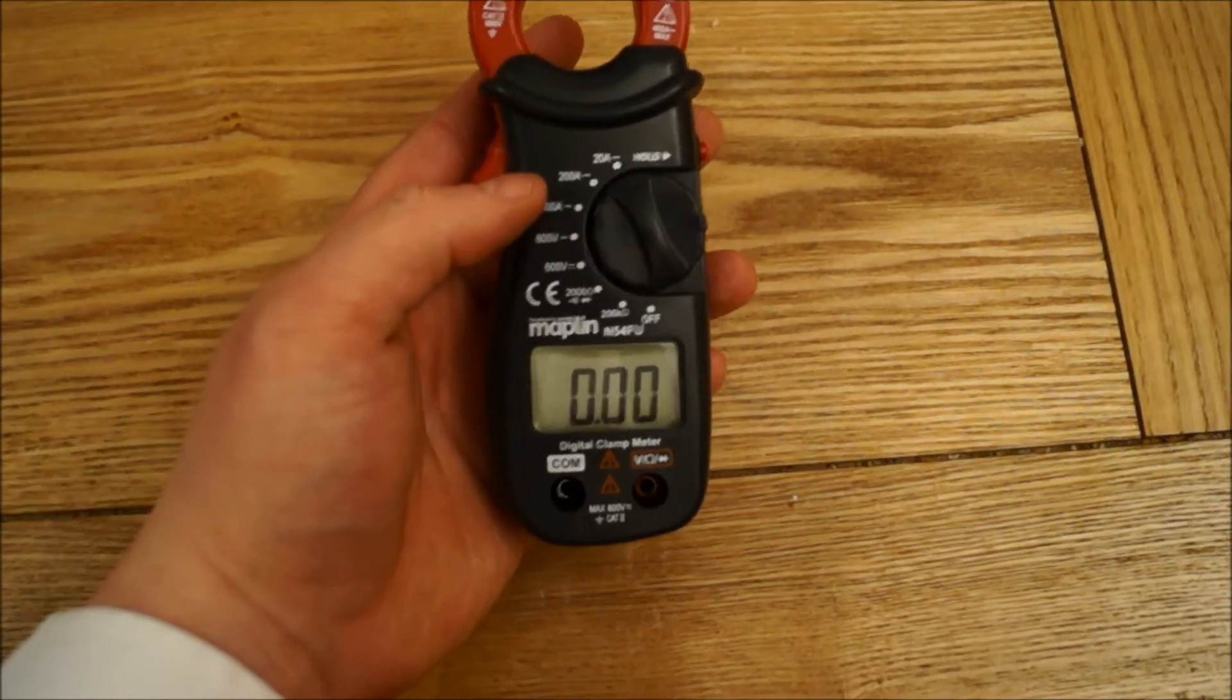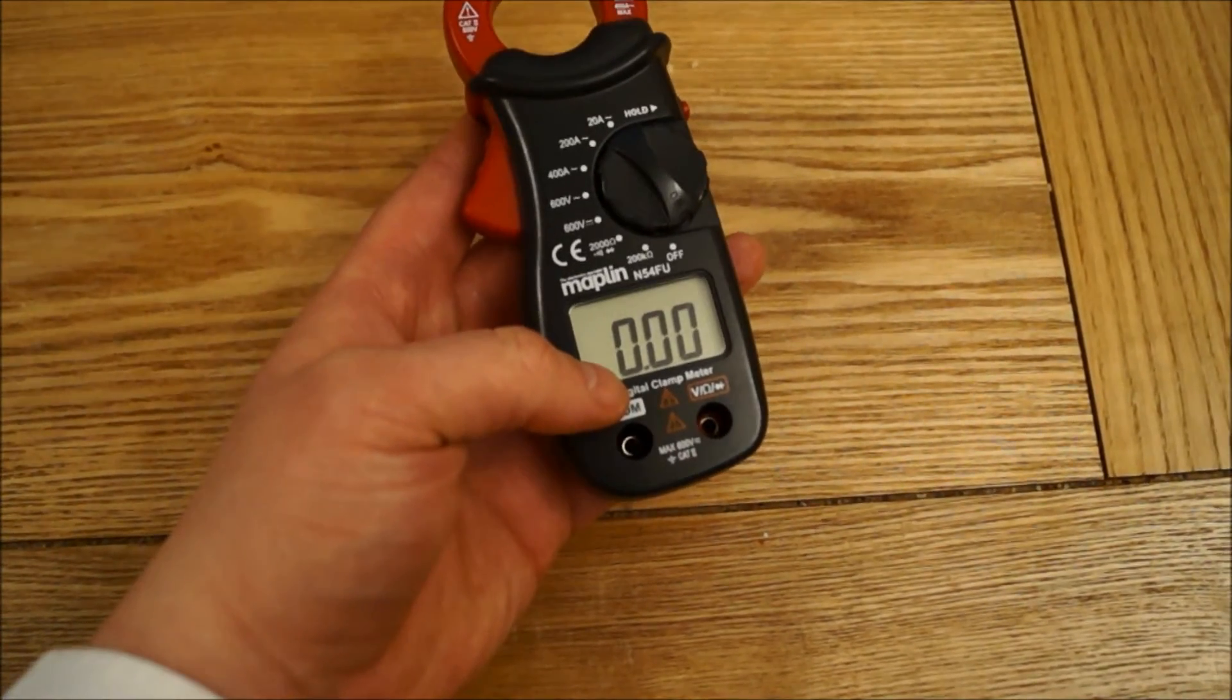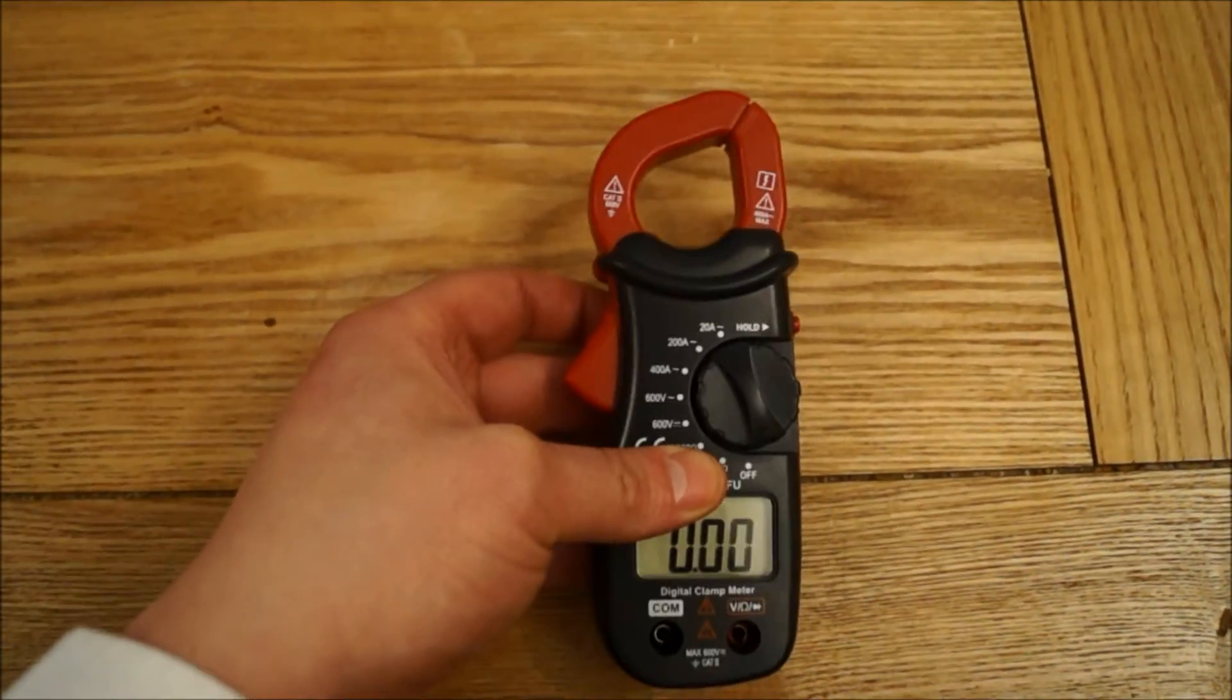And it produces an inductive field in the loop and it produces the display of amps right there. The minimum resolution goes from 20 amps right up to 400 amps. The higher the amp rating the lower the resolution is in the display. You can actually measure voltage through probes on this clamp meter but the primary use of this is for amps.